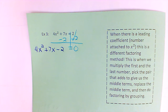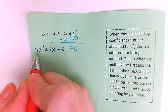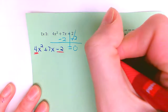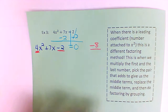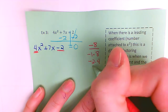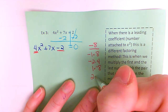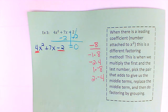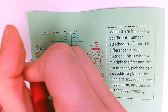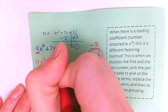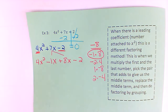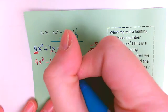We need to factor this problem, but this is a different factoring problem — this is one where you have a number in front of your x squared. You multiply the first number and the last number: four times negative two gives me negative eight. List the numbers that multiply to give me that: negative one times eight, negative two times four, one times negative eight, and two times negative four. You need to pick the pair that adds to give you the middle term seven. Negative one plus eight gives me seven, so we're going to replace the middle term. I've got four x squared minus one x plus eight x, and then minus two. All I did was break apart the seven x — now we have four terms so we can do factor by grouping.